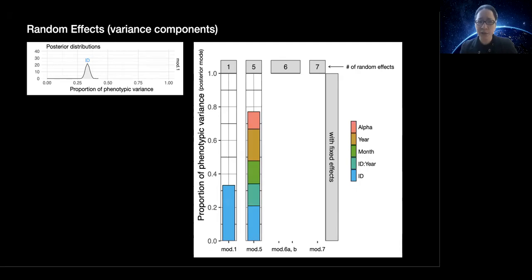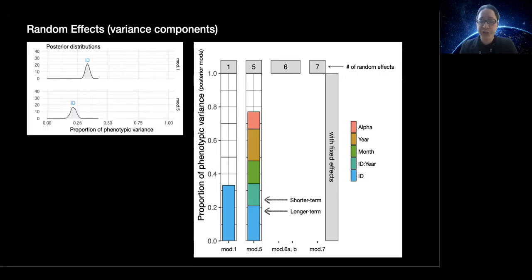However, once we include additional random effects, our point estimate for repeatability decreases. Now why is that? For one, repeatability has now been partitioned into both a shorter term and a longer term repeatability. The proportion of variance explained by repeatability across years is close to 0.21, while the proportion of the variance explained by repeatability within years is about 0.13.